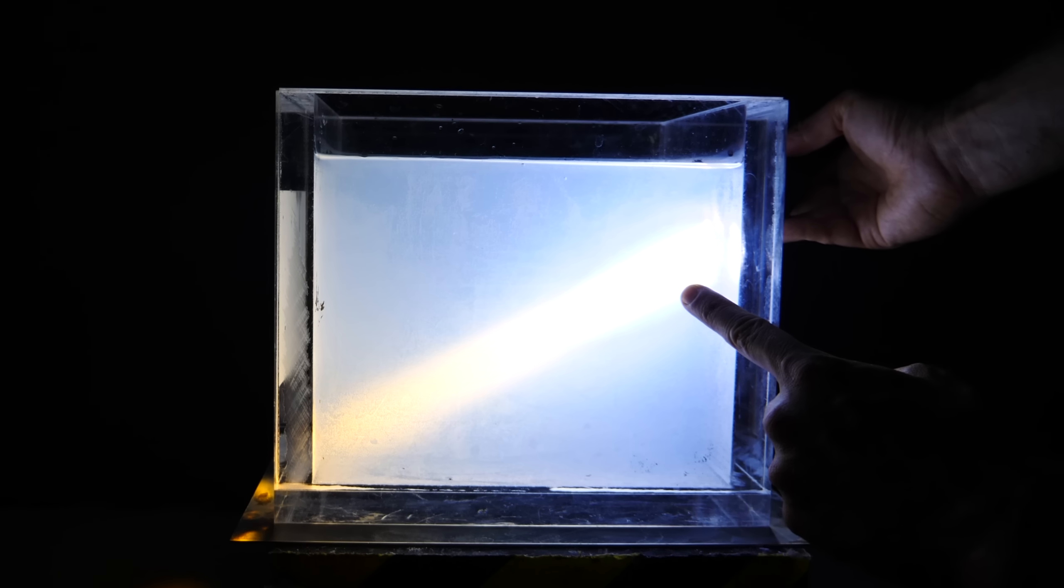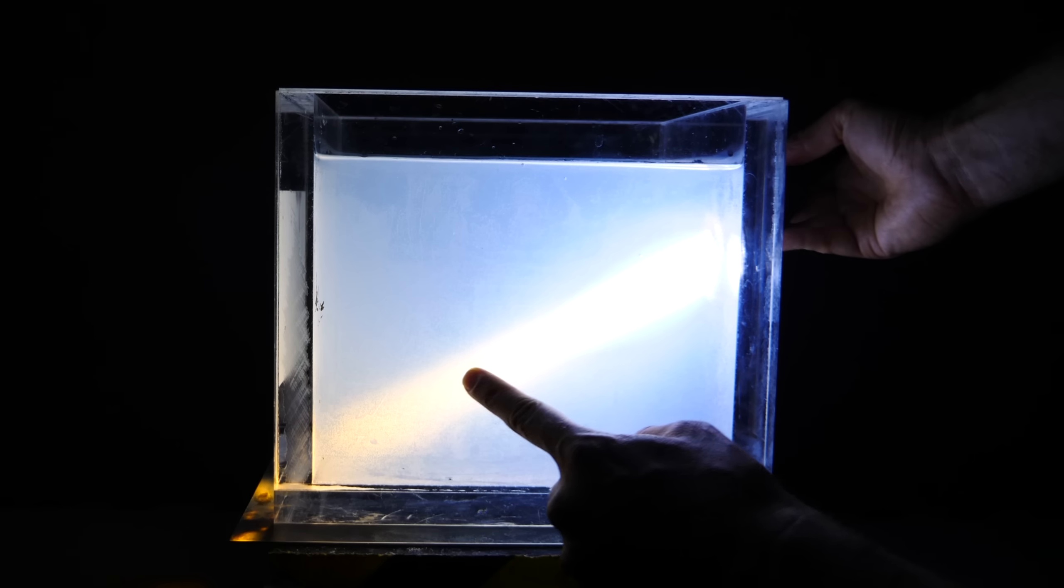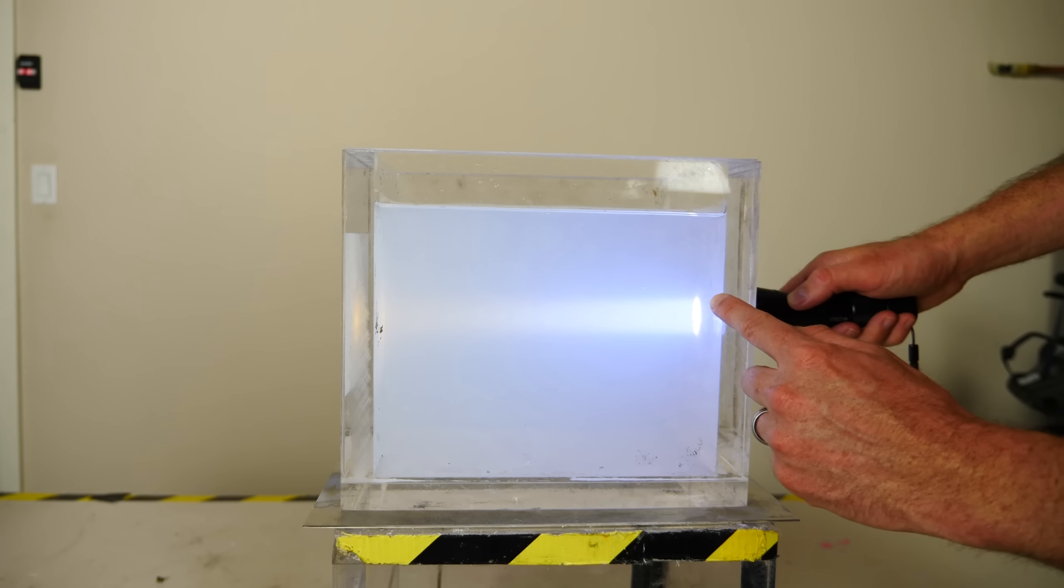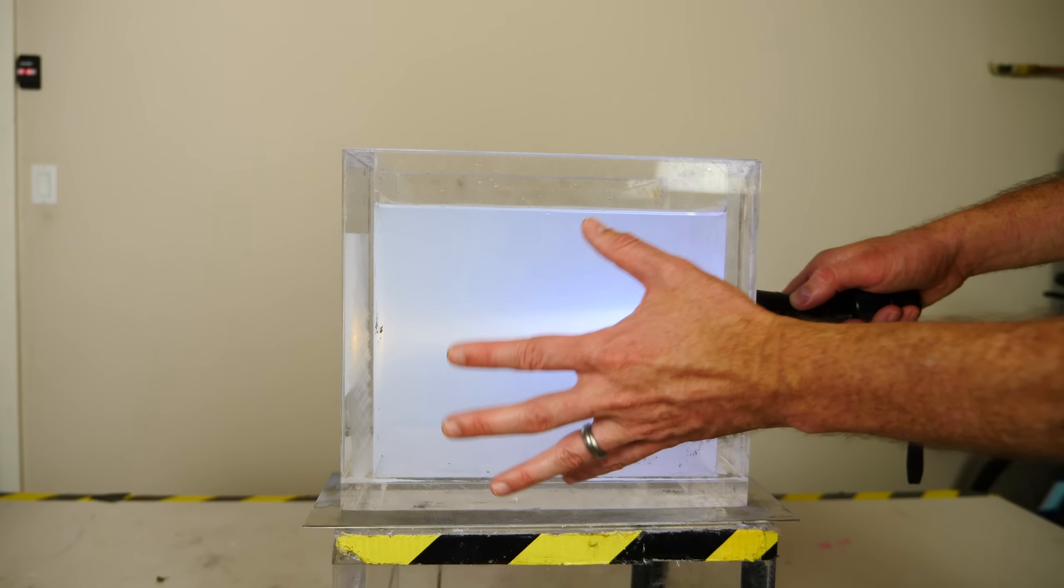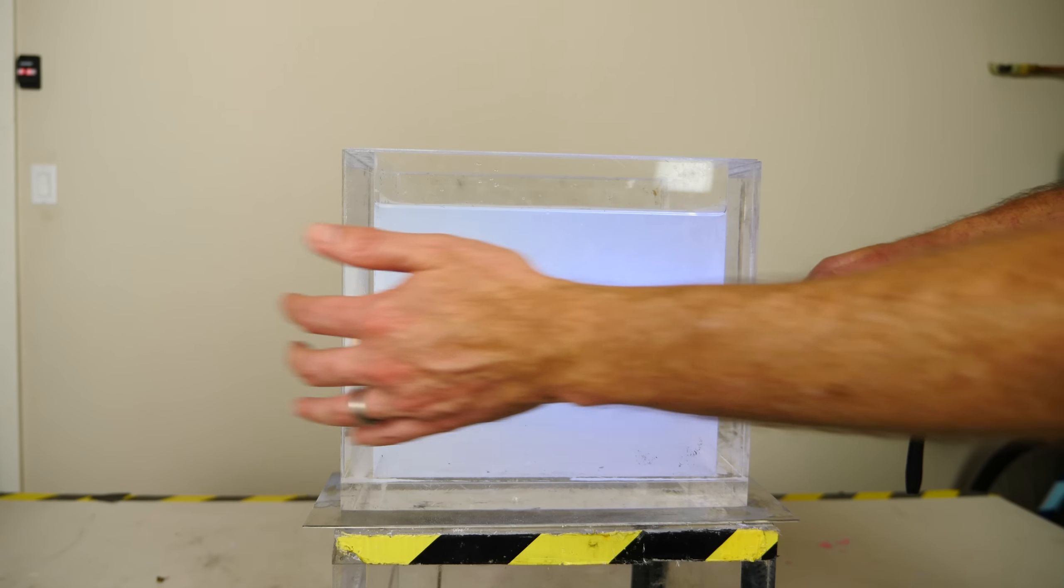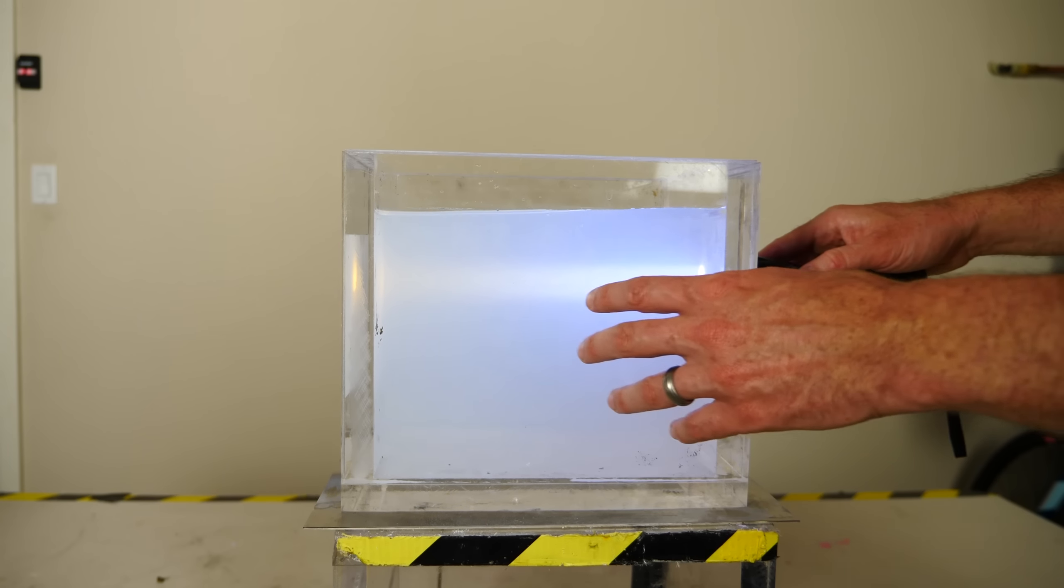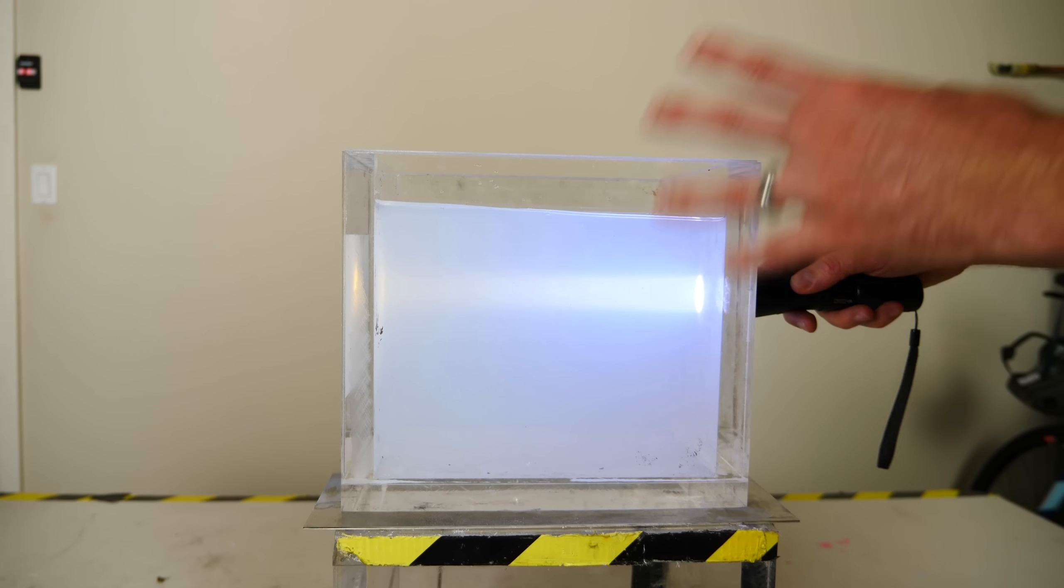Notice how it starts off as this bright white here and then ends up as this reddish color. How is this happening? Why does this liquid appear blue but the light that comes out of it look red? What's happening here is the same thing that's actually happening in the sky.